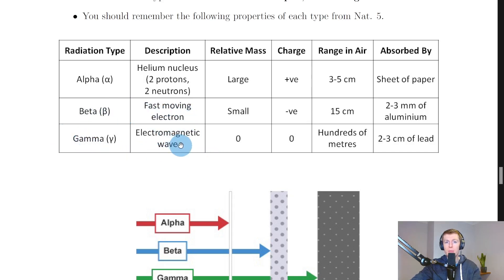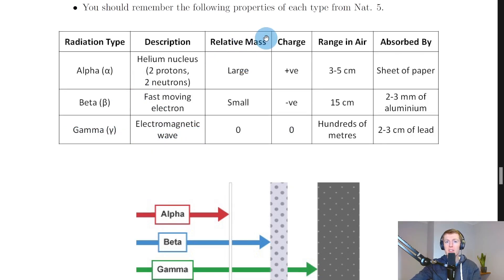And for gamma, remember that's an electromagnetic wave. So alpha and beta radiation are particles, whereas gamma rays are waves. We then have relative mass. So remember alpha particles have a large relative mass compared to the others, beta particles have a small relative mass, and gamma rays have zero mass because they're waves.